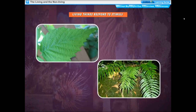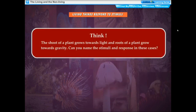Reproduction leads to an increase in the number of individuals of a species. In the absence of reproduction, organisms would perish after completing their lifespan — so reproduction ensures the survival of a species. All living things can feel and perceive changes occurring around them; this ability to respond to any external change is called sensitivity. For example, the shoot of a plant grows towards light and roots grow towards gravity.